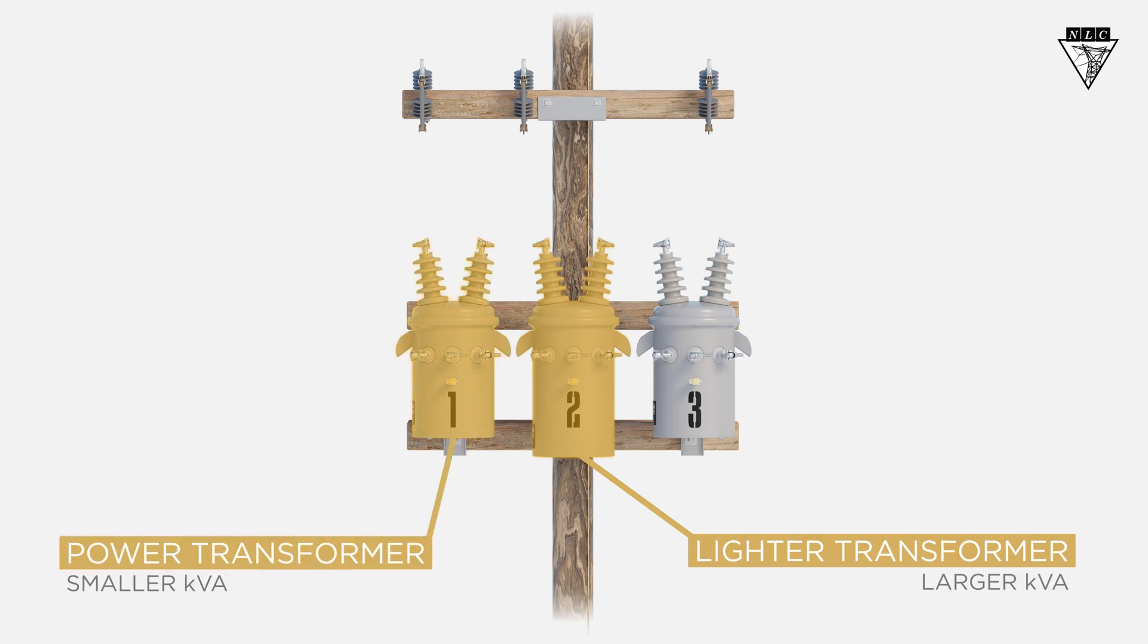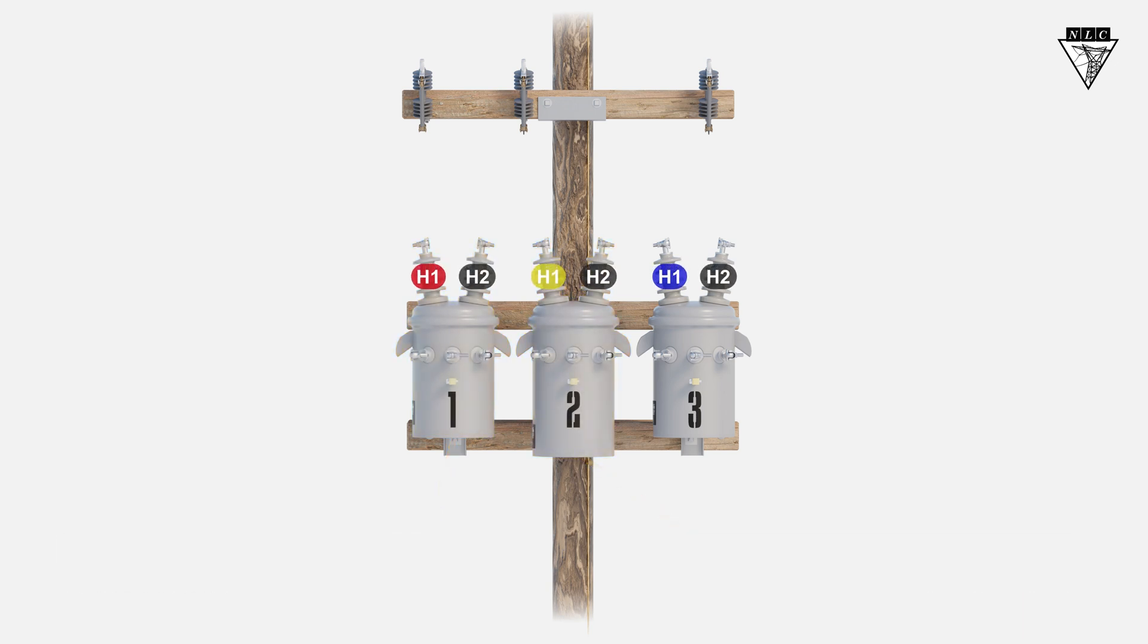Let's begin with the connections, starting on the primary side. Connect the H2 bushings together. Then connect the H1 bushings of each transformer to a phase, starting with the A phase, then the B phase, and ending with the C phase.